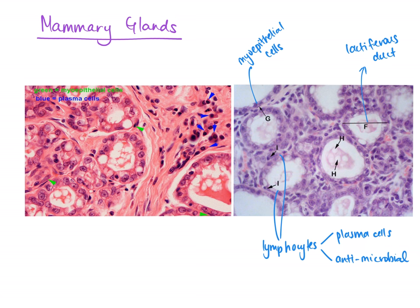Feature H in the image are adipocytes, or fat cells. Adipose tissue or fat cells are found in both the epithelial lining cells and also within the milk product in the lactiferous ducts.